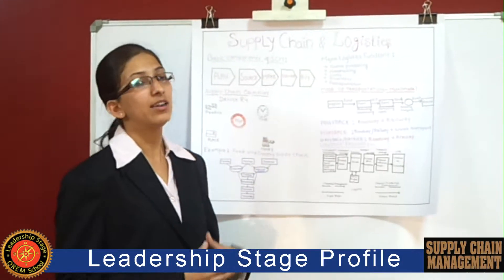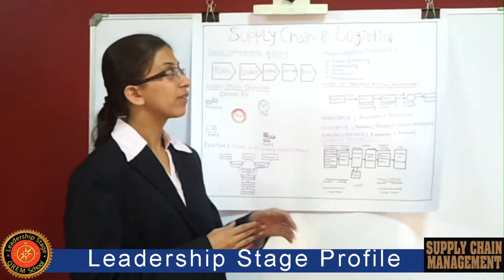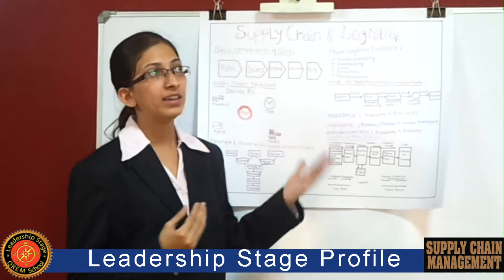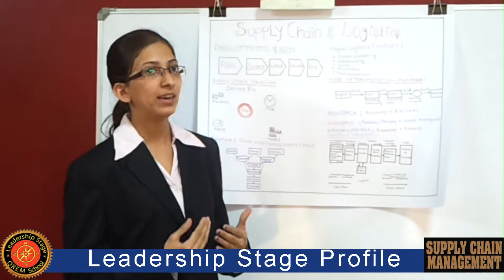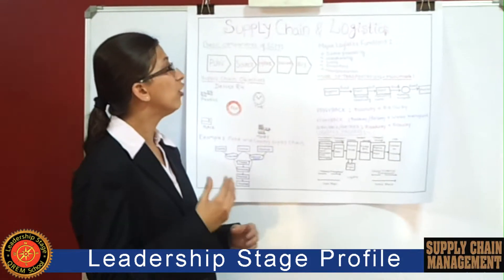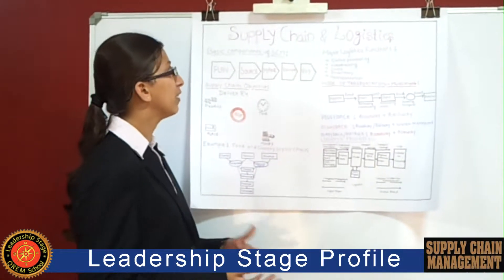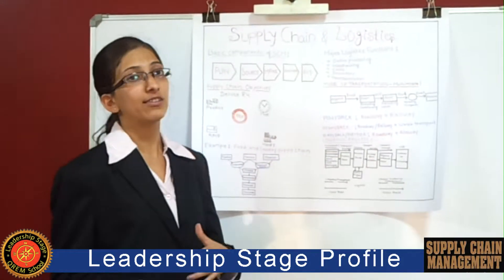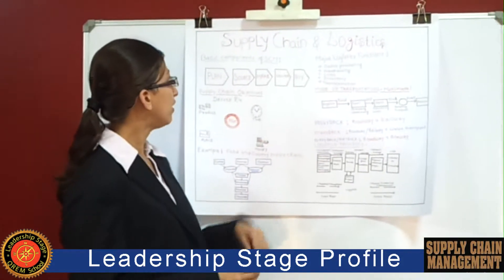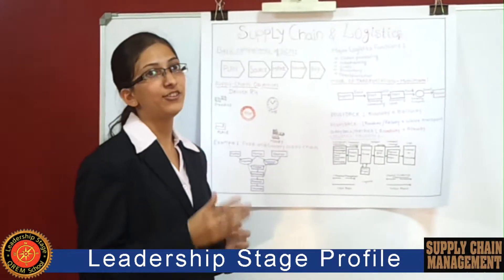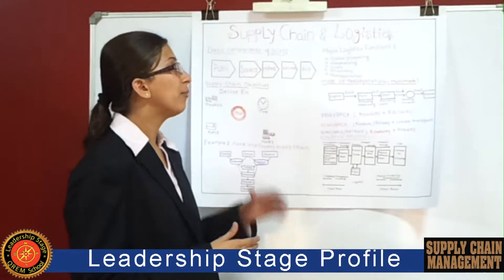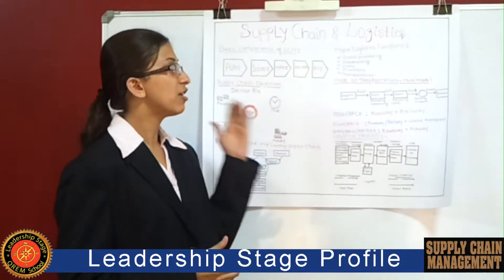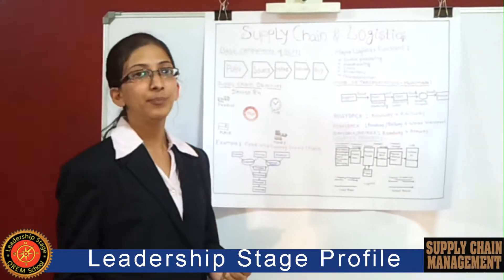Supply chain and logistics are the two sides of a coin. Supply chain means it is the flow of raw material into the company and flow of finished goods out of the company at the destination as per the customer's requirement. Logistics is an efficient and effective flow of information from the point of origin to the point of destination, which is also required by the customers.